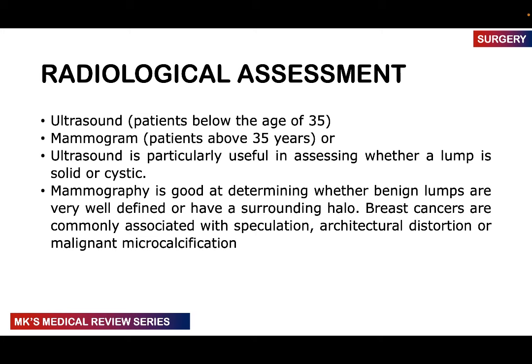The next part of the triple assessment is radiological assessment using imaging. We use two types of imaging based on age for two reasons: breast density changes with age, and breast size tends to change with age — older patients generally have larger breasts easier to compress in a mammogram. Ultrasound is used for patients less than 35; mammogram for those above 35. Ultrasound is useful for evaluating whether a lump is solid or cystic. Mammogram is good at detecting benign well-defined lumps, or breast cancer showing speculations, architectural distortion, and malignant microcalcifications.